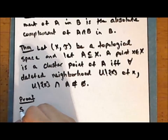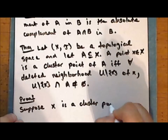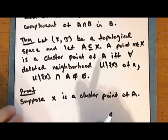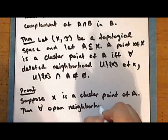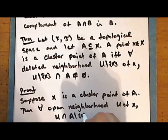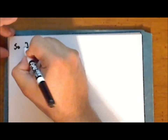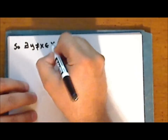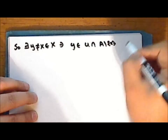Proof: suppose that the point x is a cluster point of the set A. Then for every open neighborhood U of x, we have that the intersection of that neighborhood with the complement of the singleton containing the point x in the set A is not empty. So there exists at least one point y which is distinct from the point x in the space X, such that this point y is in the intersection of the set U with the complement of the singleton containing x in the set A.